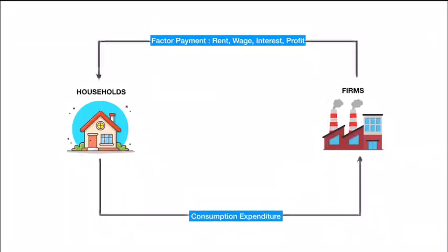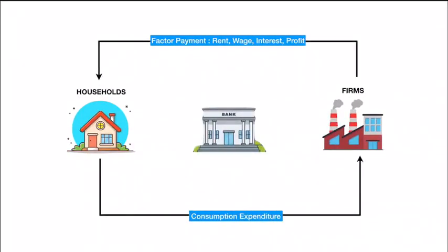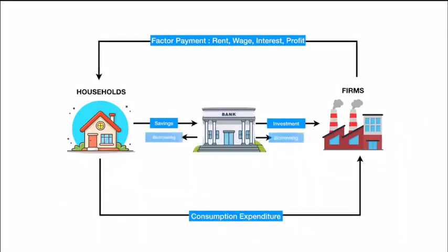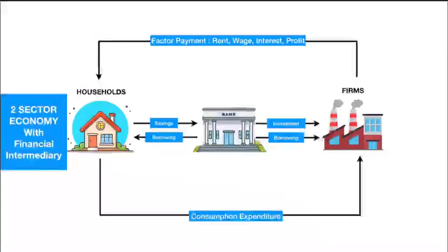Now, we assumed that whatever the household receives, it spends on consumption. But in practice, households do not spend everything they earn. And there comes the bank or financial intermediary. The household sector saves some of the income and deposits it into the bank as savings. The bank uses this money and invests into the firms as investment. Now, households also take loans or borrowings from the bank, and thus money flows in a little more complex way. This is what we call a two-sector economy with a bank or financial intermediary.